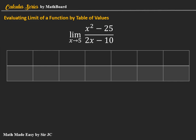The limit of x squared minus 25 divided by 2x minus 10 as x approaches 5. The first step is to think of at least six numbers or values that are nearest or closest to 5, three from the left and three from the right. So, this is our x and this is our f of x.